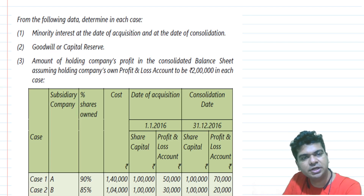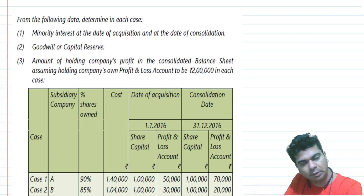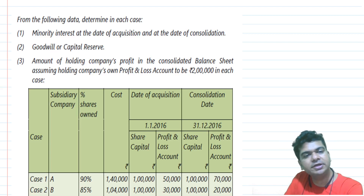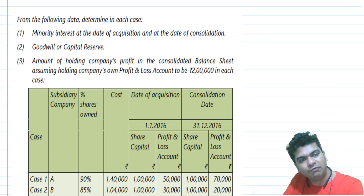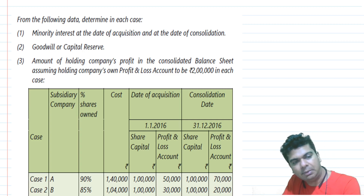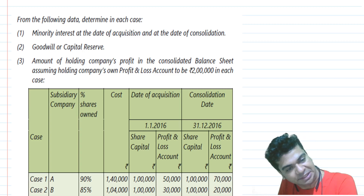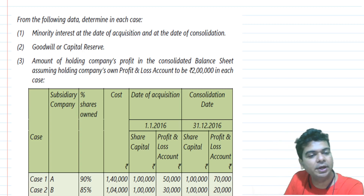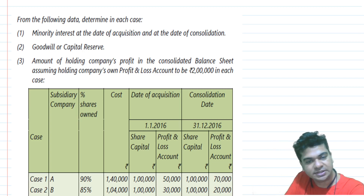From the following data, determine in each case: minority interest as at the date of acquisition and at the date of consolidation; goodwill or capital reserve; and the amount of the holding company's profit in the consolidated balance sheet, assuming the holding company's own profit and loss account to be 2 lakhs in each case.